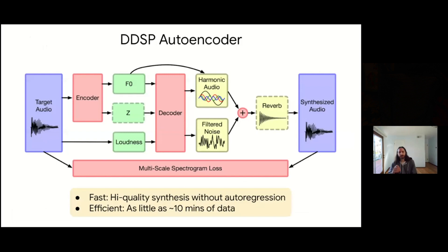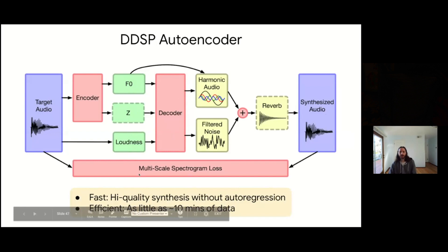We can put this into a neural network situation by taking the DSP elements and controlling them using a neural network decoder. The controls into that decoder can come from the target audio — we can extract features like the fundamental frequency and loudness of the audio, and use those as controls to drive the synthesis elements. We then look at the original audio and the audio synthesized by these elements, compare how close their spectrograms are to each other, and use that as a loss to backpropagate and correct the decoder's values, making the synthesized audio more similar to the target. This allows high-quality synthesis with much less data because we're not using autoregression.